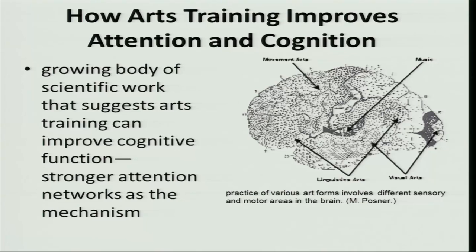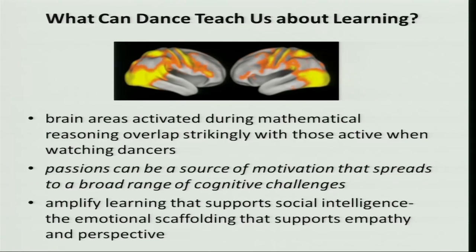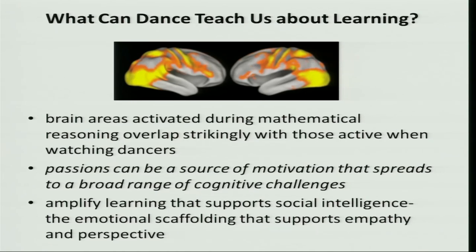The practice of various art forms involves different areas of the brain. There has been some work which showed that if you show people a video of people dancing, the brain areas activated during this are the same brain areas activated during mathematical reasoning, because they overlap strikingly with the areas which occur when you are watching people dancing.